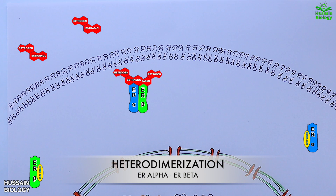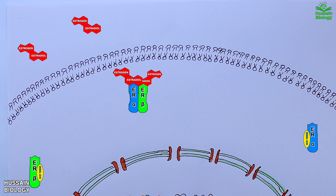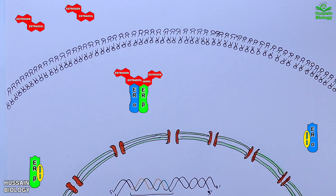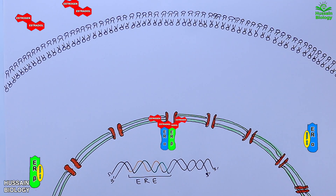Dimerization of ER receptors produces either homodimers — ERα/ERα — or heterodimers — ERα/ERβ. Both can drive the pathway. We now have the active dimer of the estrogen receptor, which then enters the nucleus.